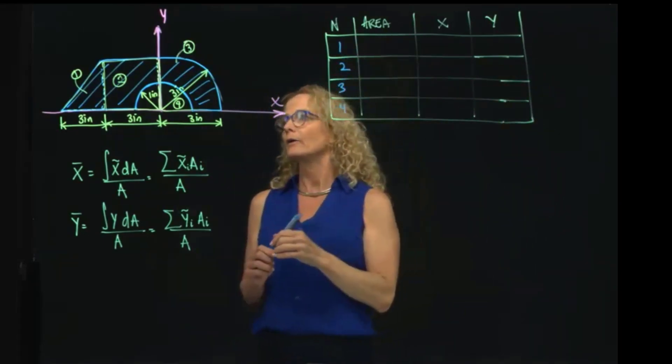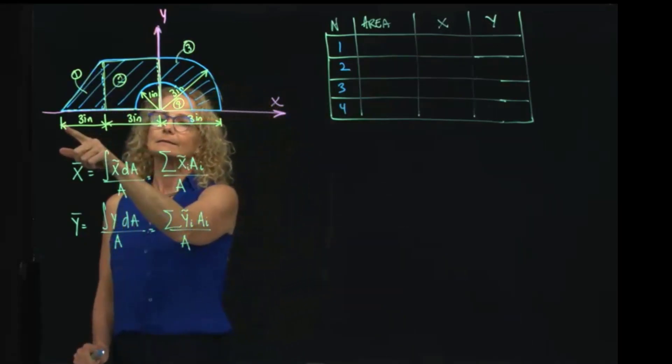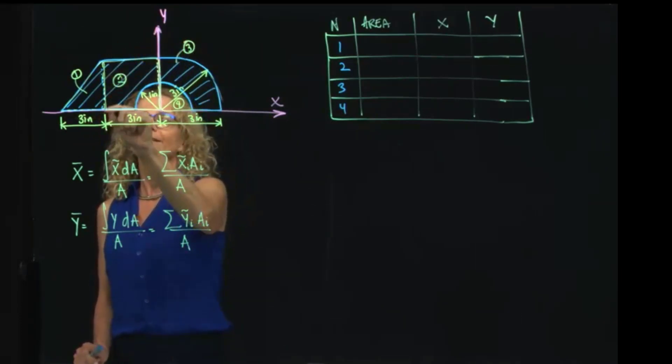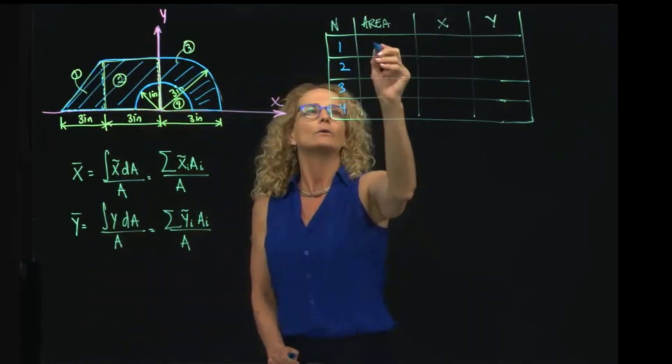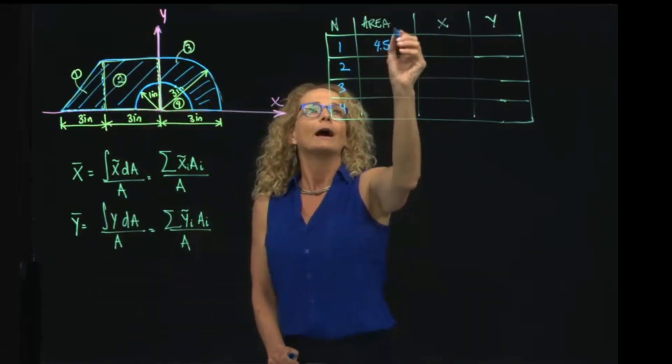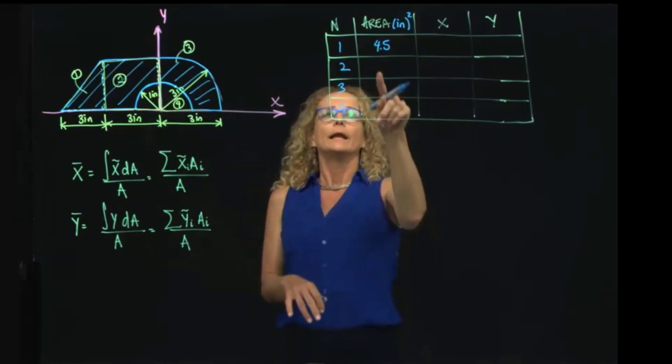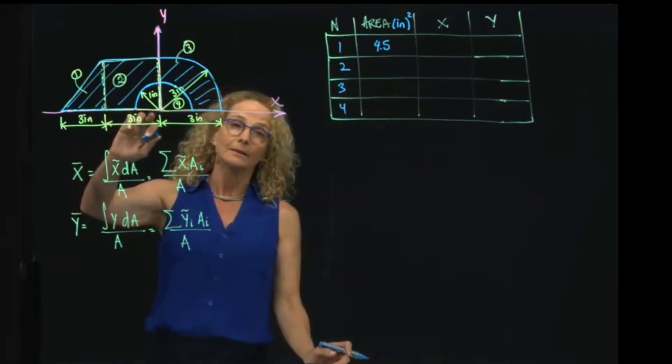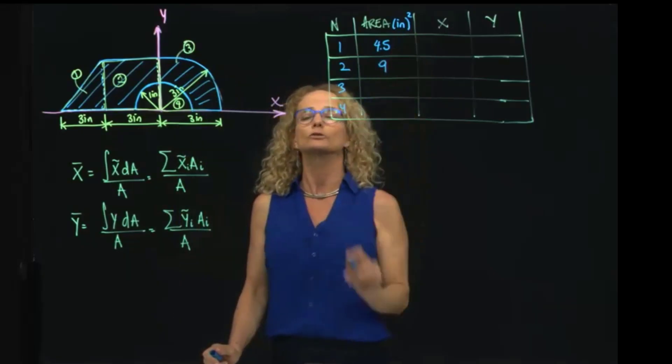So the area of the first figure is that triangle, and we see that the base is 3, the height is also 3 because this radius is 3. So it will be 3 times 3 divided by 2. So the area of that triangle is 4.5, and all is in inches squared. Then my second is a rectangle, which base is 3 and the height is 3. So this will be 9 inches squared.